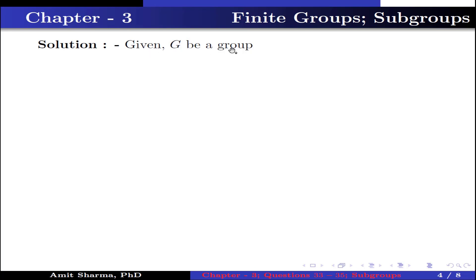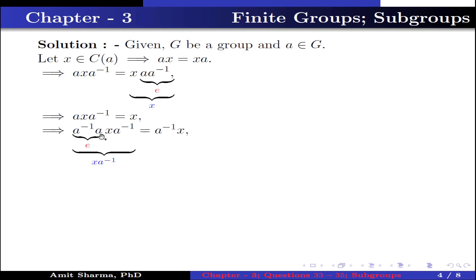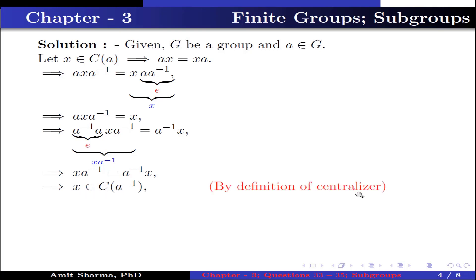Given G is a group and A ∈ G. Let x ∈ C(A). This implies xA = Ax by the definition of centralizer. Multiplying A⁻¹ on both sides, we get xA·A⁻¹ = A·x·A⁻¹. Since A·A⁻¹ is the identity, this gives x = AxA⁻¹. Multiplying A⁻¹ on both sides gives xA⁻¹ = A⁻¹x. This implies x ∈ C(A⁻¹) by the definition of centralizer. Therefore C(A) ⊆ C(A⁻¹).